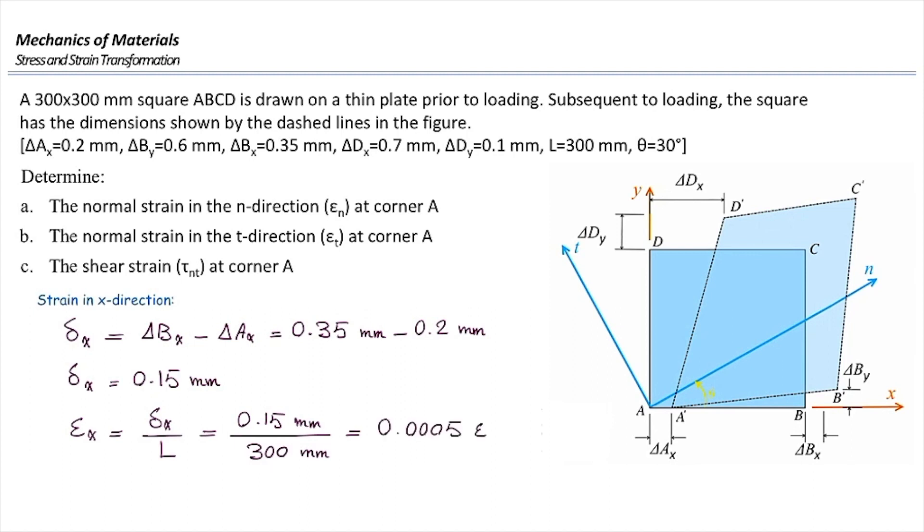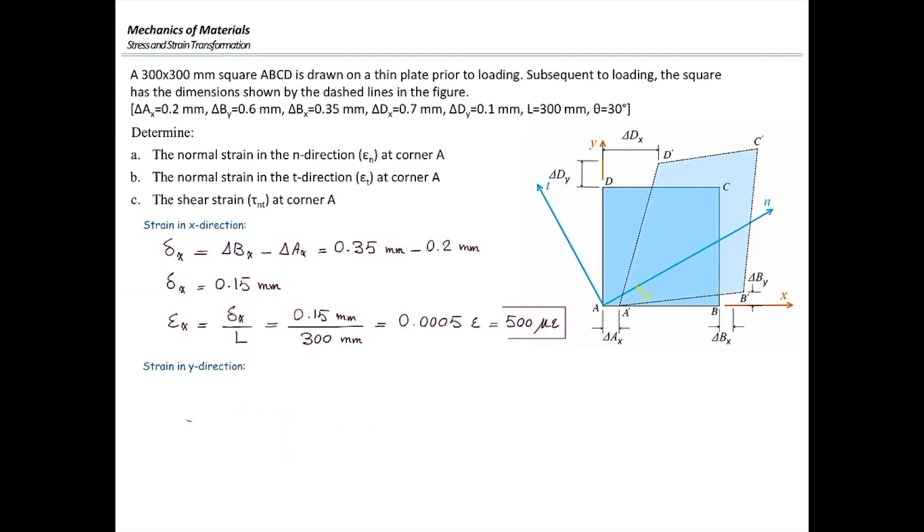So that would be normal strain in that direction, which is 0.0005 or 500 microepsilon. Same is true for strain in the Y direction. Point A didn't move upward, but point D has stretched by delta DY. So delta Y in that direction is equal to delta DY, which is 0.1 millimeter. Divide that by the initial length, which is 300 millimeter. That would give us strain in that direction equal to 0.000333 or 333 microepsilon.